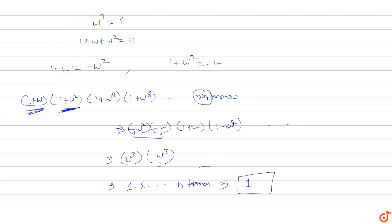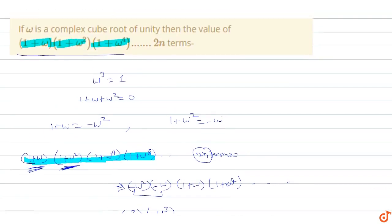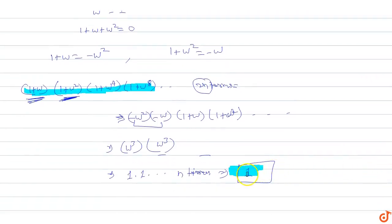Therefore, the value of (1 + omega)(1 + omega squared)(1 + omega to the power 4), up to 2n terms, equals 1. So the answer to this question is 1.